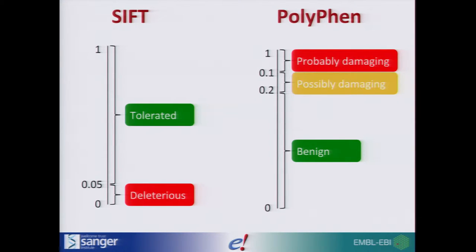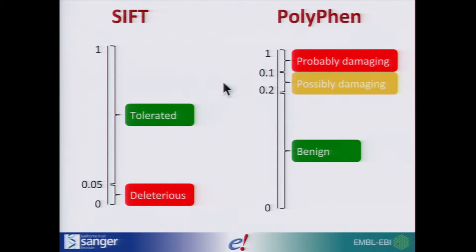The people who created SIFT and PolyPhen must not have been talking to each other, because they both came up with scores out of one but gave us completely opposite scales, which is very confusing. For SIFT, everything between 0.05 and 1 is fine — the protein is going to work. Everything between 0 and 0.05 is deleterious. PolyPhen is the opposite: 1 to 0.1 is probably damaging, and 0.2 to 0 is benign. They helpfully give predictions as well as scores.